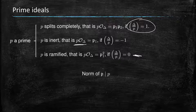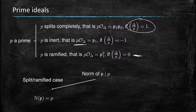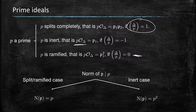The norm of a prime ideal lying above a rational prime p can take two different values. In the split or ramified case, because f equals 1 — the dimension of O divided by p over Fp — the norm of the prime ideal is just p. Only in the inert case do we have something different, where the norm of the prime is p squared. These are the two possibilities, making the quadratic case very restrictive compared to general number fields.